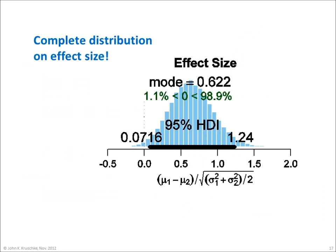Bayesian estimation also provides a complete distribution of effect size. Effect size is the difference of the means relative to the pooled standard deviation. We see here that the distribution of credible effect sizes is slightly skewed, with a modal value of 0.622, and it is credibly non-zero, insofar as the 95% HDI excludes zero.